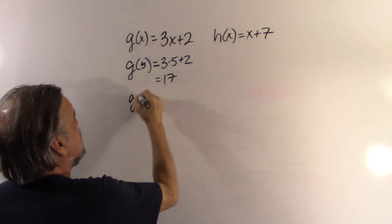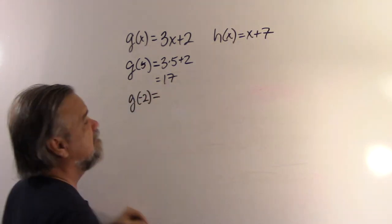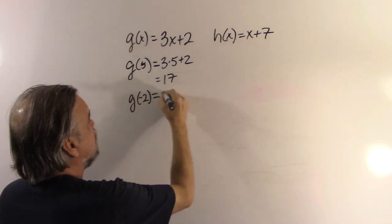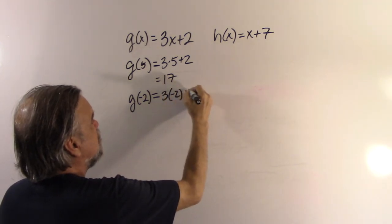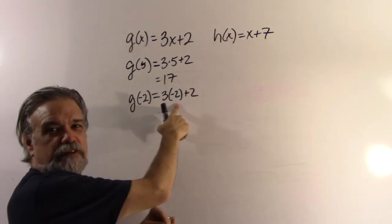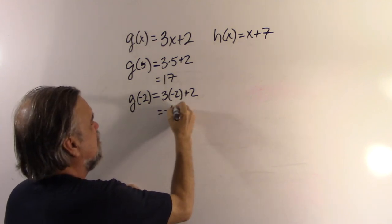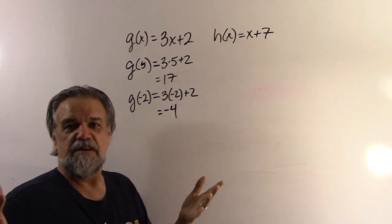If I have g(-2), that would be 3 times -2 plus 2. 3 times -2 is -6, plus 2 is -4. Easy enough.